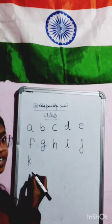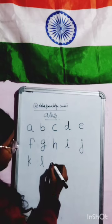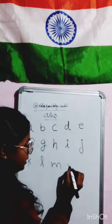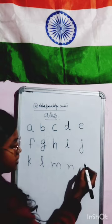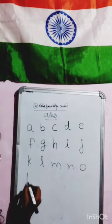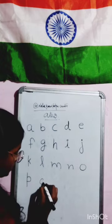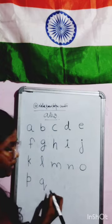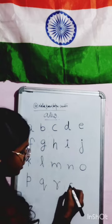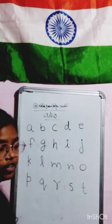J for Joker, K for Kite, L for Lion, M for Monkey, N for Nest, O for Orange, P for Parrot, Q for Queen, R for Rabbit, S for Ship.